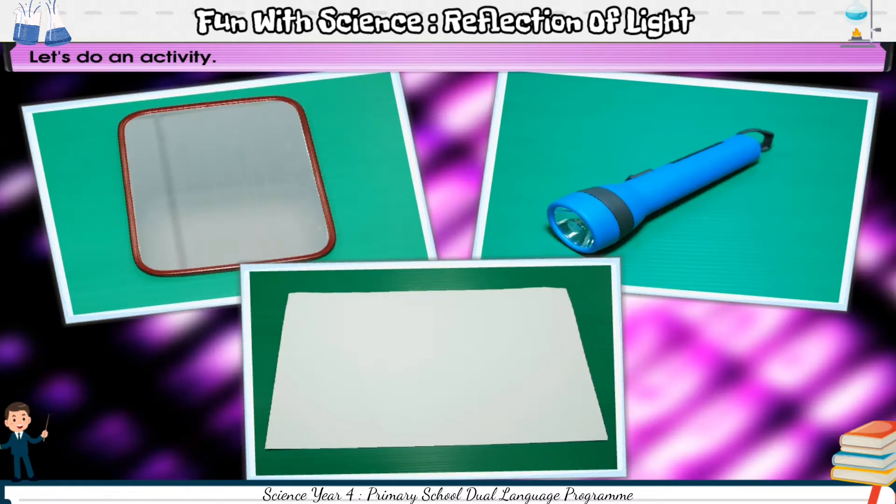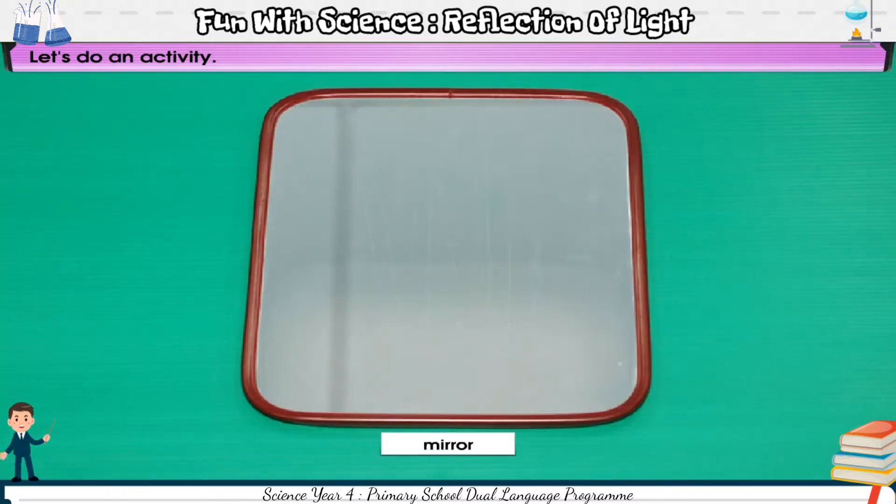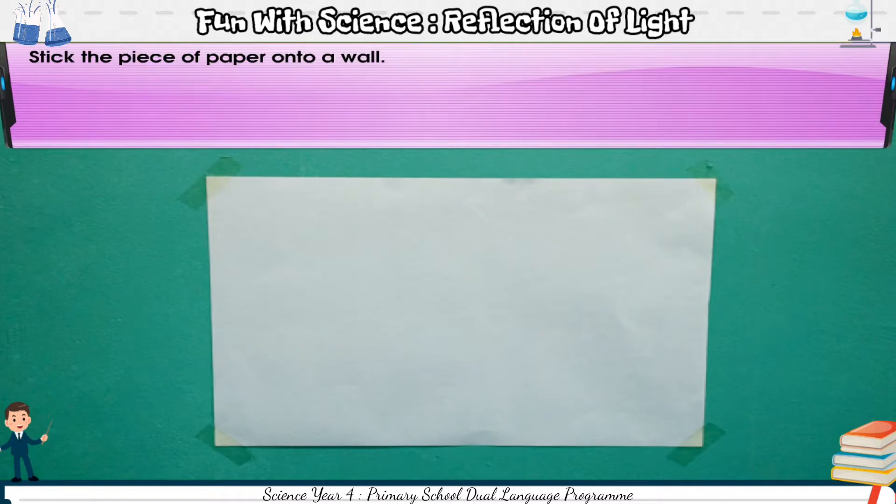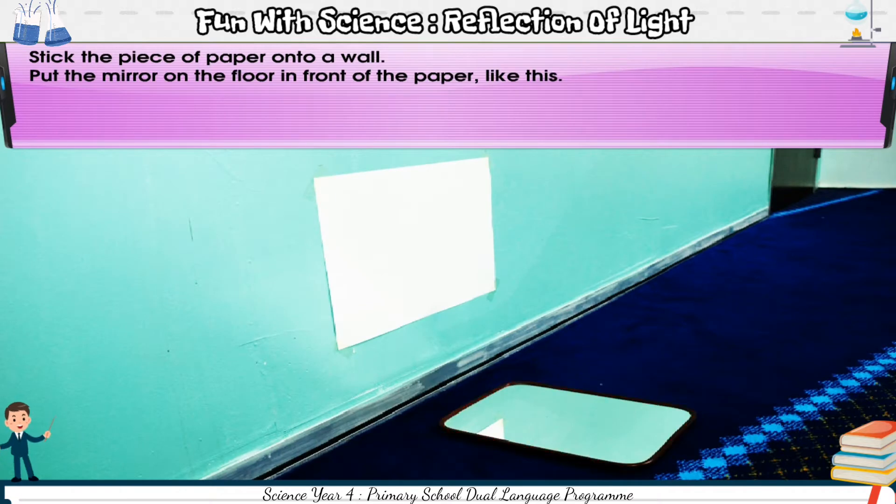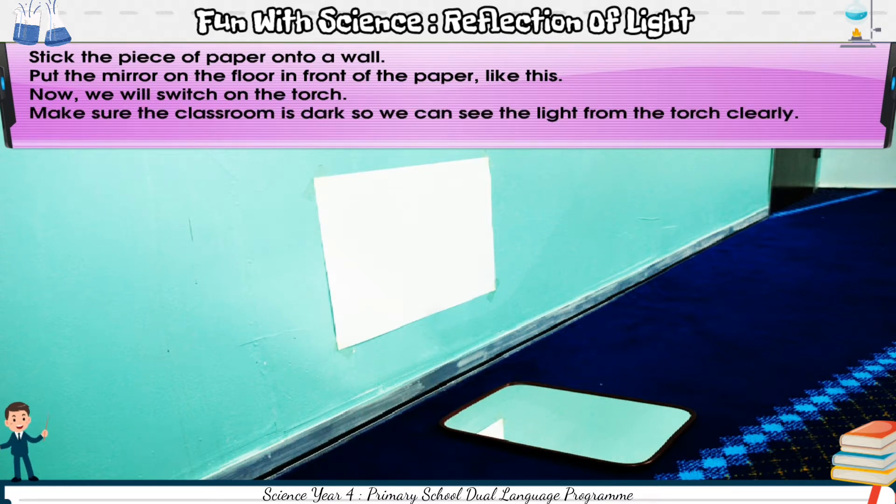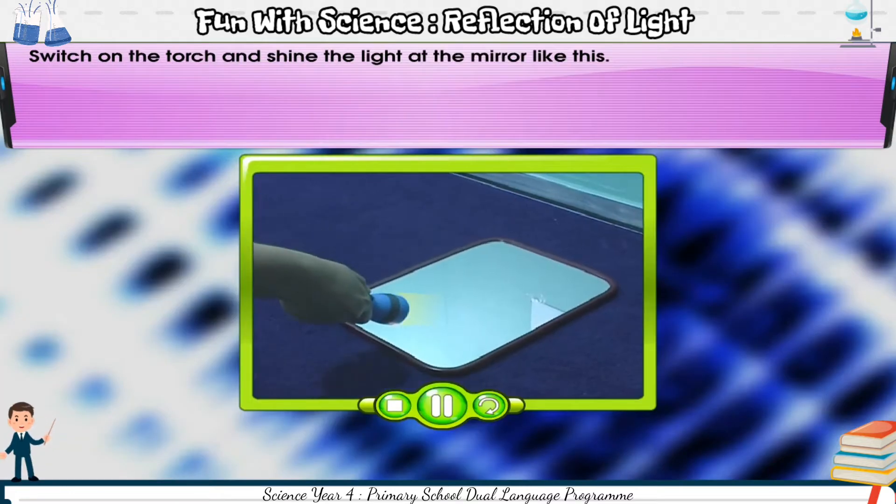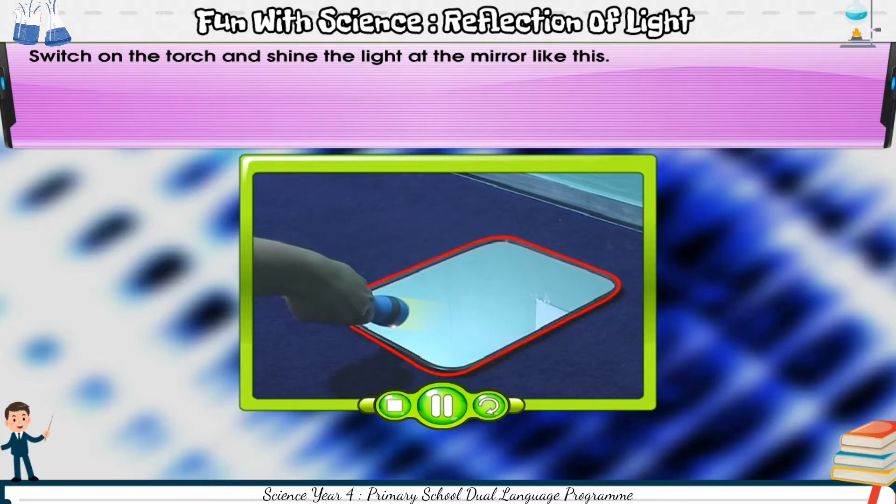Let's do an activity. You are given a mirror, a torch, and a piece of white paper. Stick the piece of paper onto a wall. Put the mirror on the floor in front of the paper like this. Now, we will switch on the torch. Make sure the classroom is dark so we can see the light from the torch clearly. Shut all the doors and windows and switch off all the lights. Switch on the torch and shine the light at the mirror like this.